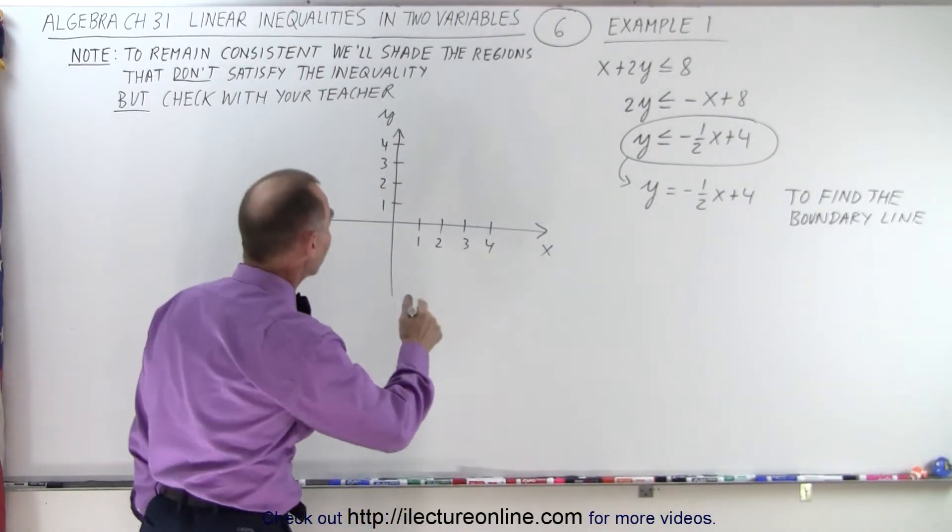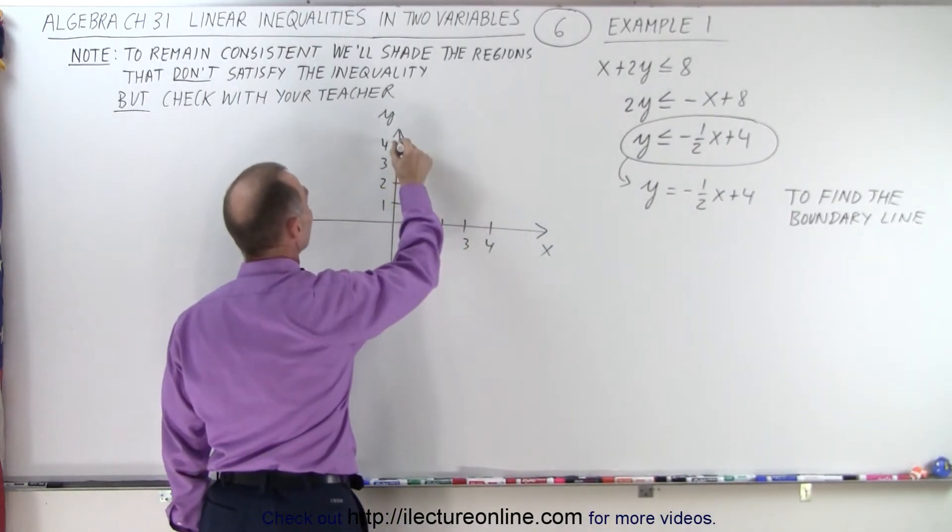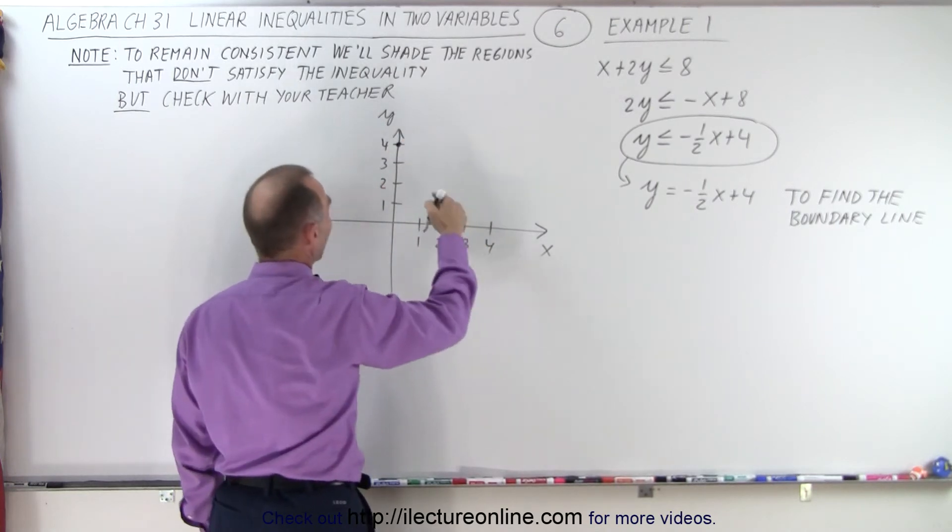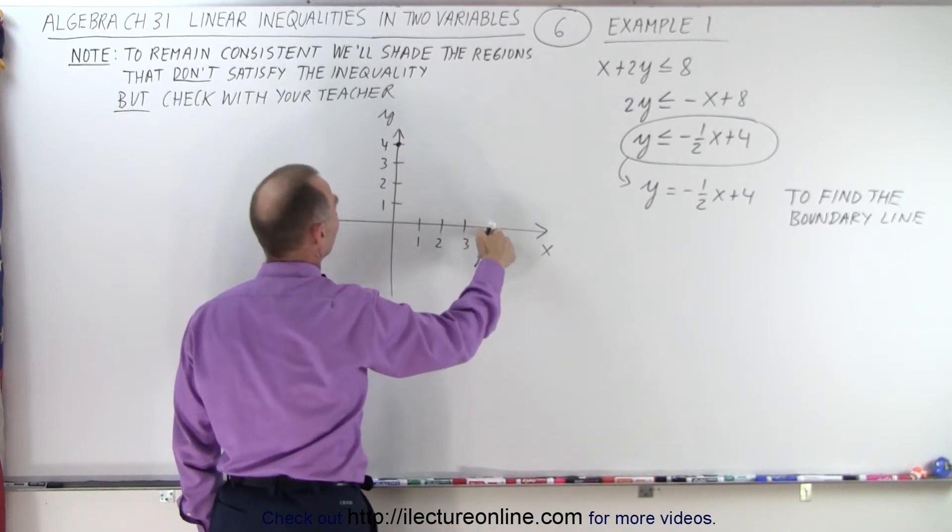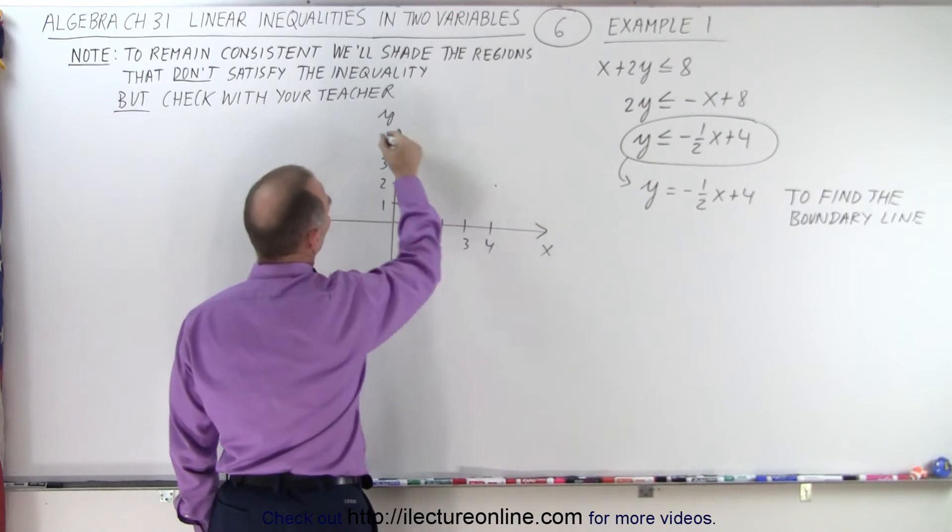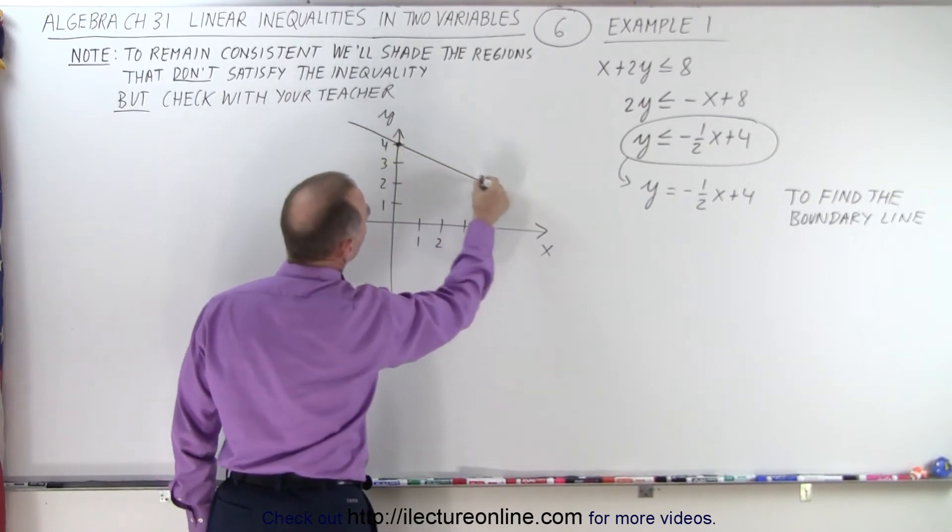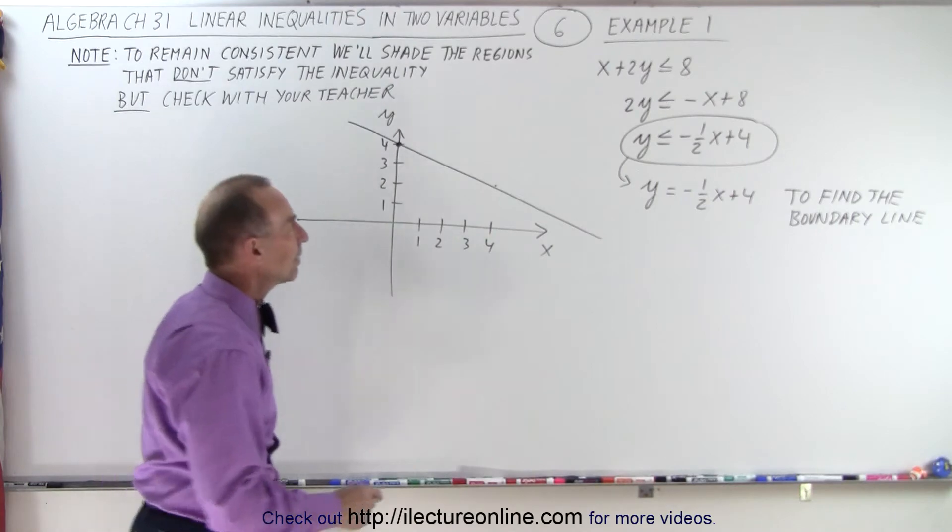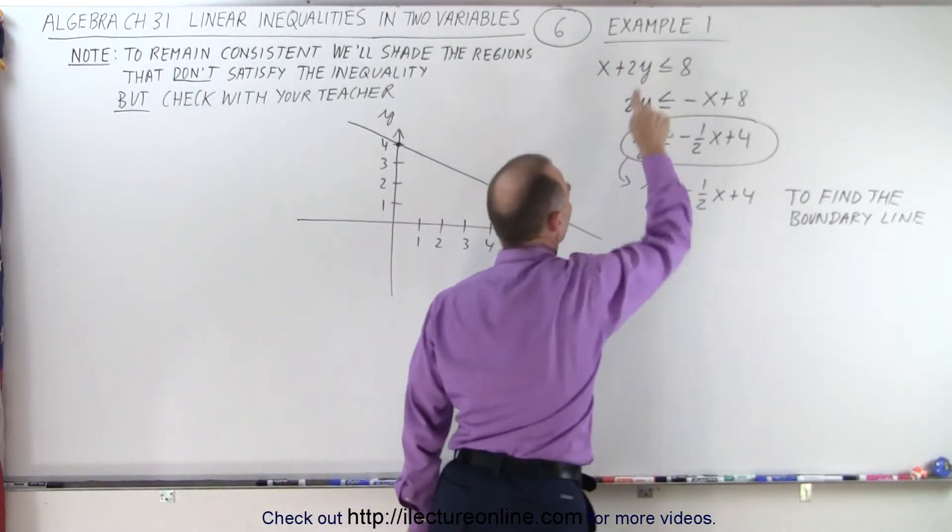We have the intercept at 4: 1, 2, 3, 4. There's the intercept, and the slope is -1/2. So by the time we get to 4, we drop down 2. So the line looks like this, and it is indeed a solid line. Why is it a solid line? Because it includes the equal symbol.